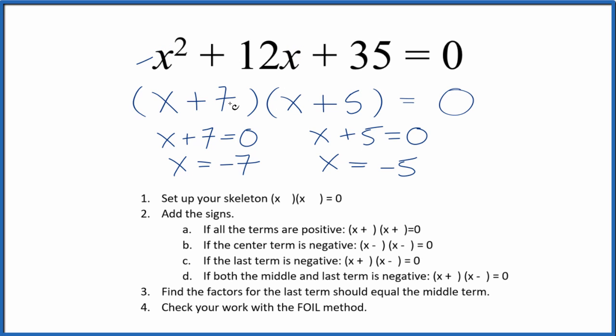If you use the quadratic equation, you'd end up with these same answers. This is Dr. B factoring the equation x squared plus 12x plus 35 equals zero. Thanks for watching.